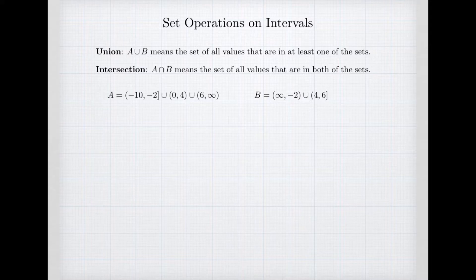So we have two basic operations that we'll be talking about. One is union. We write union with this union symbol A union B and that means the set of all values that are in at least one of the sets. And secondly we have intersection, written with this upside down symbol, the cap. That's the set of all values that are in both of the sets.